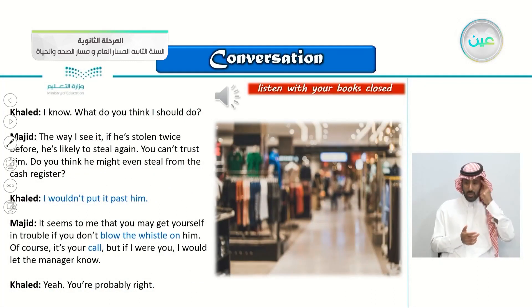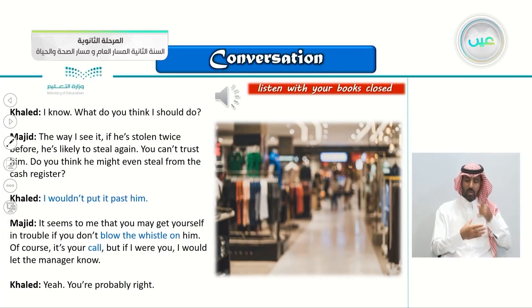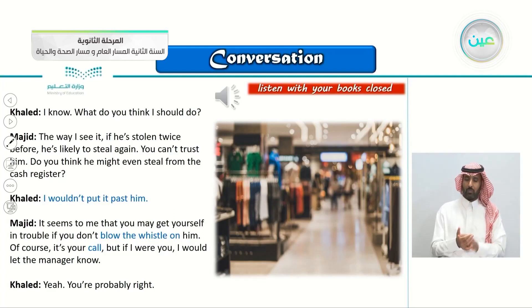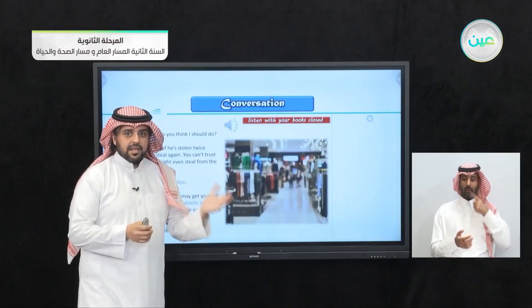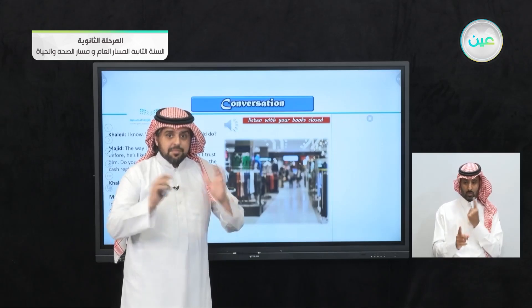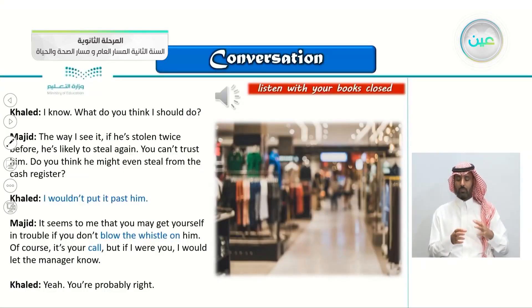Khalid: I know. What do you think I should do? Majid: The way I see it, if he's stolen twice before, he's likely to steal again. Do you think he might even steal from the cash register? Khalid: I wouldn't put it past him. Majid: It seems to me that you may get yourself in trouble if you don't blow the whistle on him. Of course, it's your call. But if I were you, I would let the manager know. Khalid: Yeah, you're probably right. Notice here — Majid said, 'If I were you, I would let the manager know,' using the present hypothetical conditional.